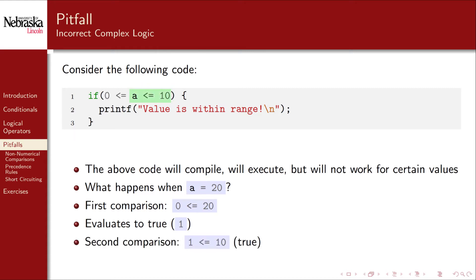When the next comparison is evaluated it evaluates to true since 1 is less than or equal to 10. However this is clearly wrong as 20 does not lie within the intended range.